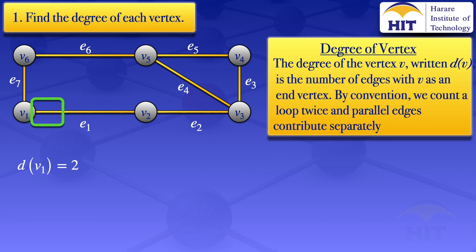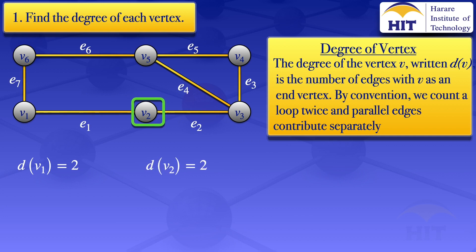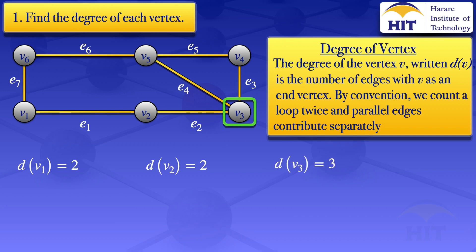Moving on to vertex v2, we see that it is the end vertex for edges e1 and e2 — two edges. So the degree of v2 is 2. Moving on to vertex v3, it is an end vertex for edges e2, e3, and e4 — three edges. So the degree of v3 is 3. Moving on to vertex v4, there are two edges: e3 and e5. So the degree of v4 is 2.